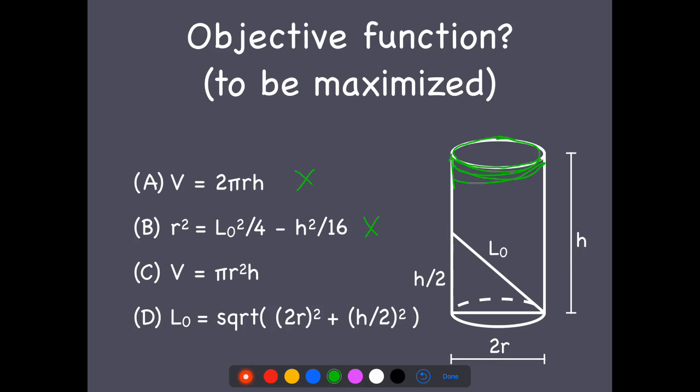πr²h, that's the area of this guy multiplied by h. That's the volume. So this is actually what we're looking for. And L₀, that's a fixed quantity. So this is not what we're interested in in this problem. We're looking for the objective function, the thing that we're trying to maximize. So that's going to be option C.